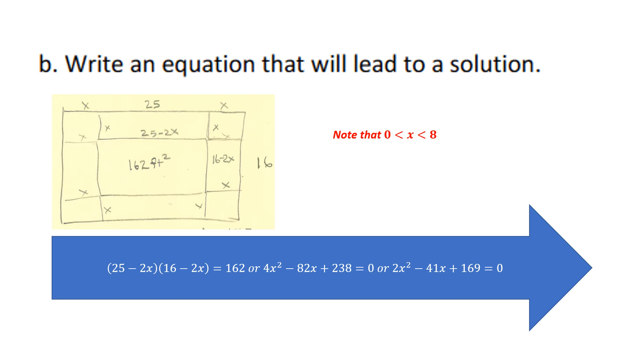The second part asks you to write an equation that will lead to a solution. Well, you could write a number of equations, but one thing that you want to note at this time is because you do really need to have both of these be positive numbers, that x is, and you need to have it be a positive dimension, that x is between 0 and 8, strictly between 0 and 8. Okay, so, the equation could be you're going to take this dimension times this dimension equal 162, and you could write that different ways. Here is this most simplified way, perhaps, to write it. 2x squared minus 41x plus 169 is equal to 0.